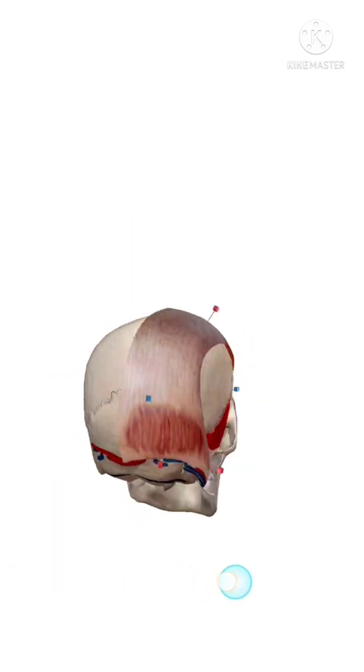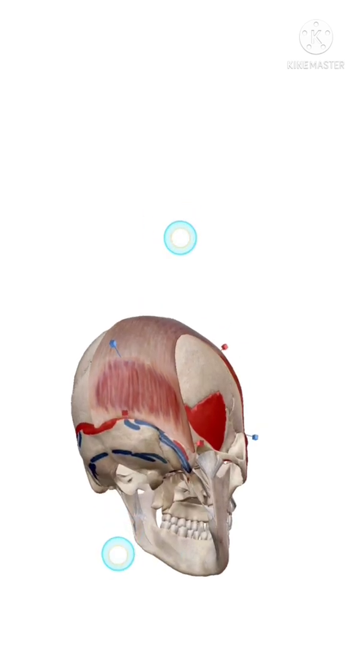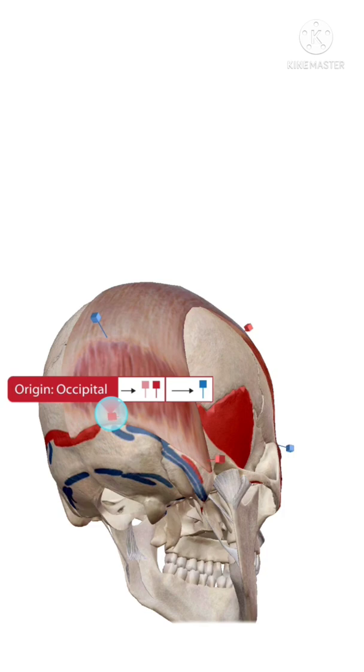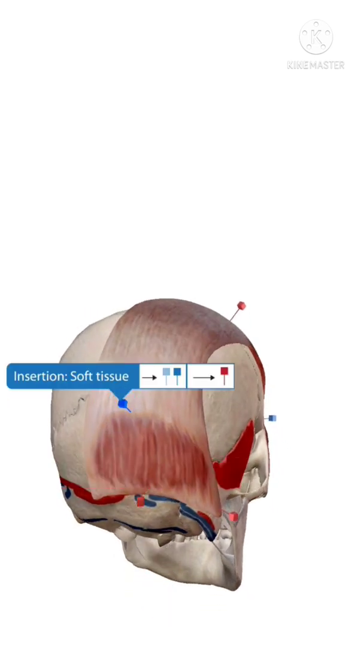Let's have a look at the origin and insertion of your occipitofrontalis muscle. The occipital belly originates from your temporal region and your occipital region, and it is inserted in the soft tissue of this aponeurosis.